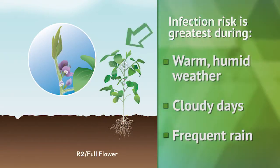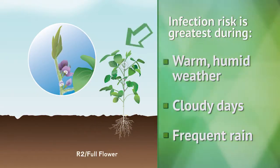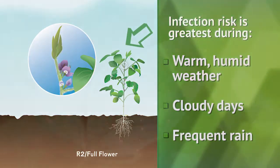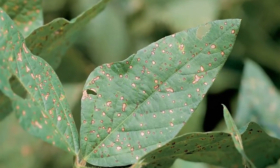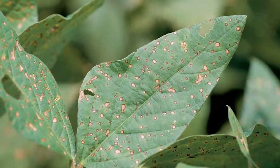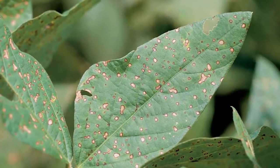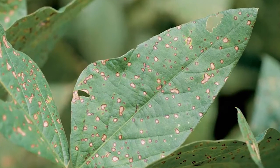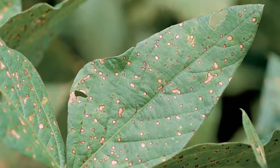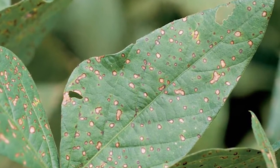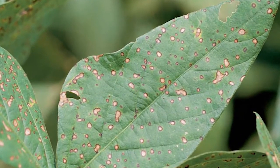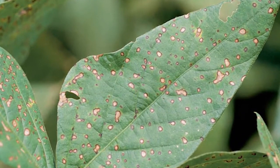Typically, frog eye leaf spot is seen in the upper canopy. Initial symptoms appear as small circular to angular spots on leaves which resemble the eyes of frogs. They begin as dark water-soaked spots and develop into brown spots.